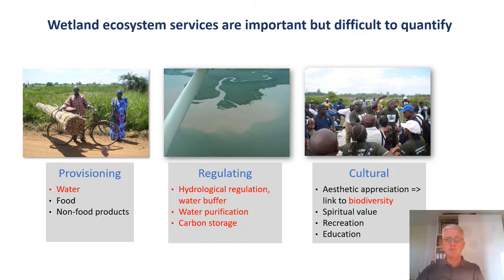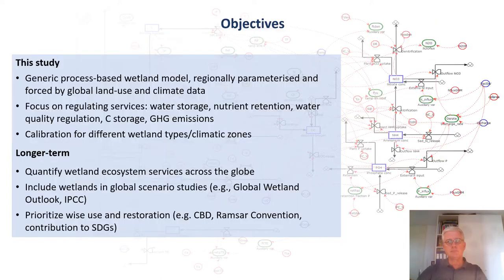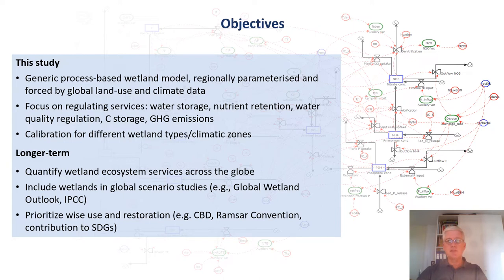Models can help describe these processes, deal with their dynamics and complexity, and make quantitative estimates of regulating services that can be used in decision making. So the objectives of this study are, first of all, the development of a process-based wetland model that can be parameterized regionally for different wetland characteristics and that can be driven by global climate and land use data. The focus of this model is on the regulating ecosystem services like water and nutrient storage, water quality regulation, and carbon and greenhouse gases. In particular, we want to calibrate the model for different wetland types in different climate zones. In the longer term, we aim at applying the model in global studies and assessments of wetland ecosystem services.